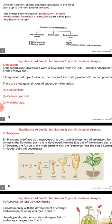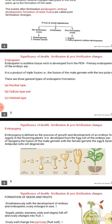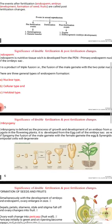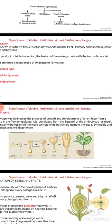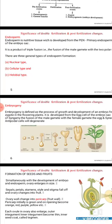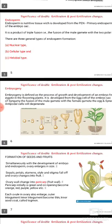Endosperm is a nutritive tissue developed from the primary endosperm nucleus of the embryo sac. It is a product of triple fusion — that is, the fusion of the male gamete with the two polar nuclei, which form the secondary nucleus, hence it is called triple fusion. There are three general types of endosperm formation: nuclear type, cellular type, and helobial type.